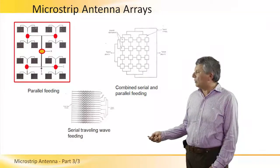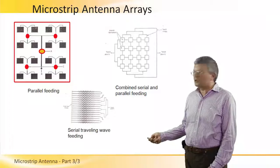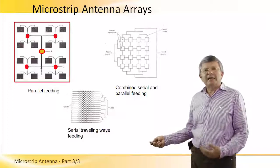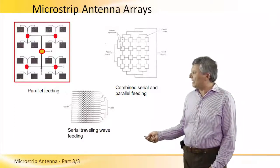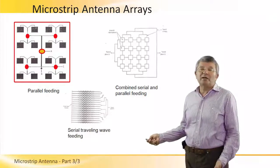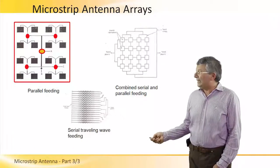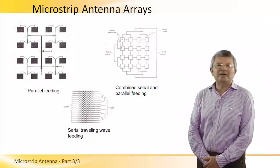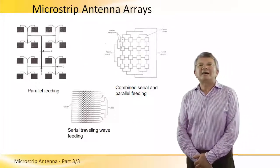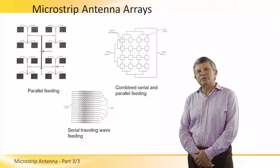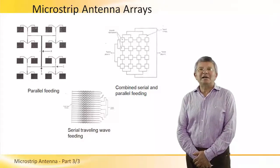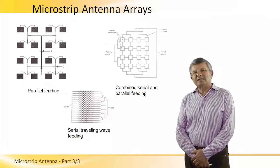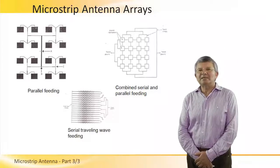The great advantage of parallel feeding is that since all line lengths are equal, they are not frequency-dependent, and therefore the maximum of the antenna array beam remains stable in space. This is not the case for serial feeding, where the beam can shift with frequency.